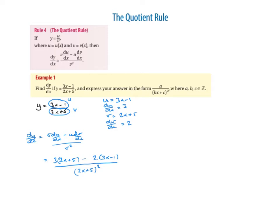Now we need to tidy up the top. We've got 3 times the first bracket minus 2 times the second bracket. So 3 times 2x is 6x, 3 times 5 is positive 15. Then minus 2 times 3x is minus 6x, and minus 2 times minus 1 is positive 2. That's all over (2x plus 5) all squared.